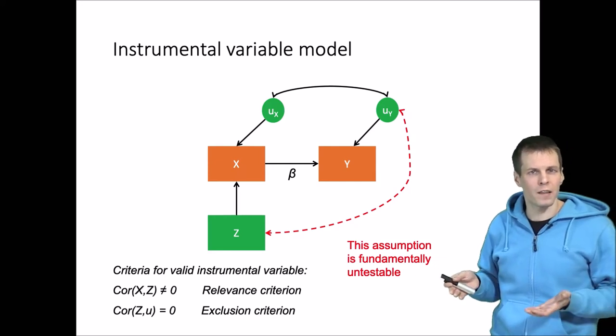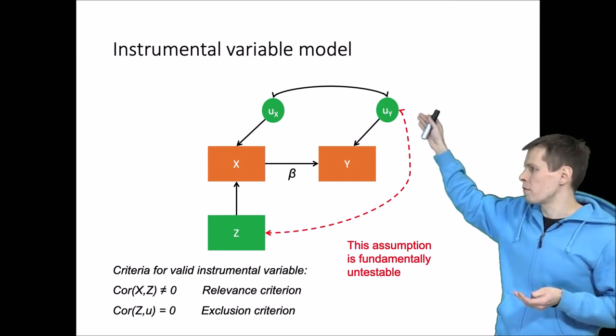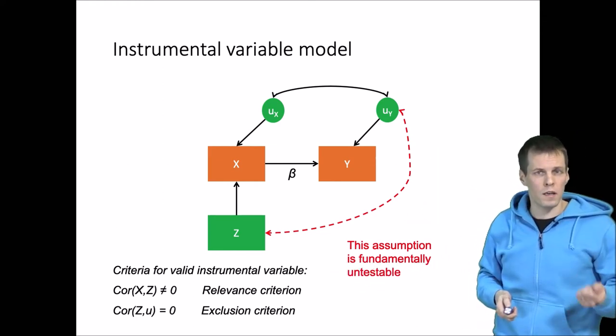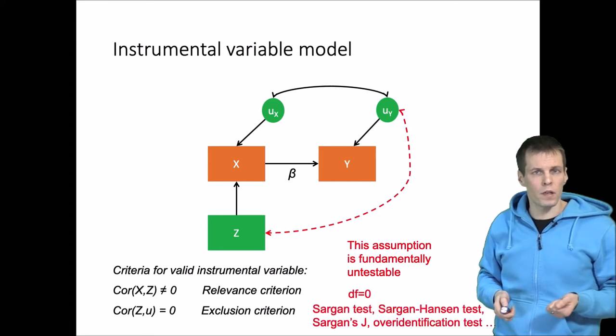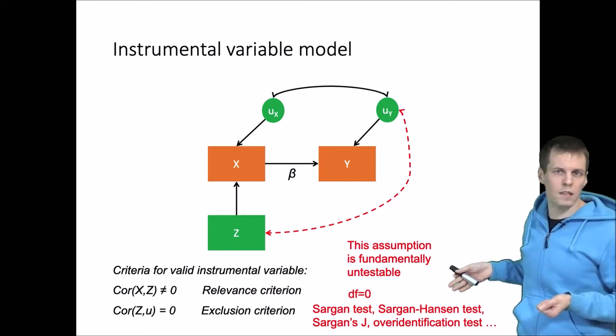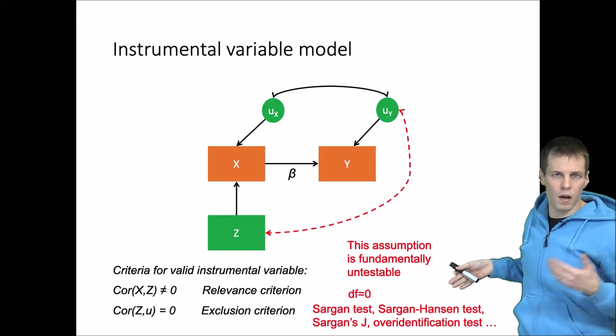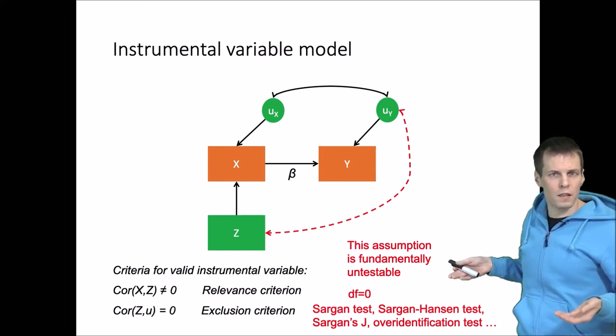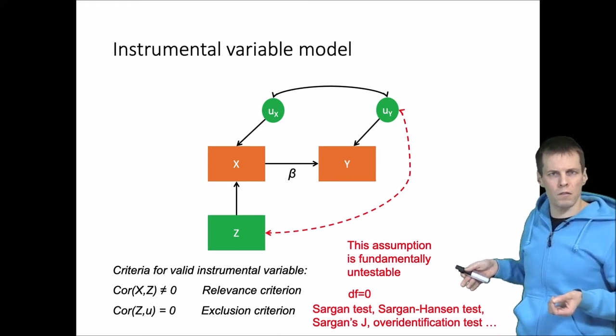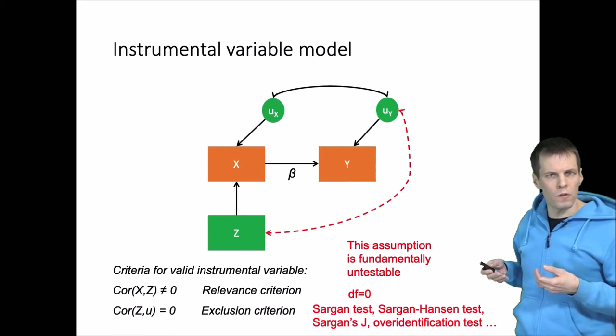But that is fundamentally untestable because we don't observe UY so we can't correlate with Z. And also this model is just identified. We have zero degrees of freedom so we can't really test anything. But anyway, we have this test called Sargan test, Sargan J, Sargan Hansen test over-identification tests that claim to be testing this exclusion criteria. So what do these tests actually test and in which way do they test the exclusion criteria? Let's take a look.